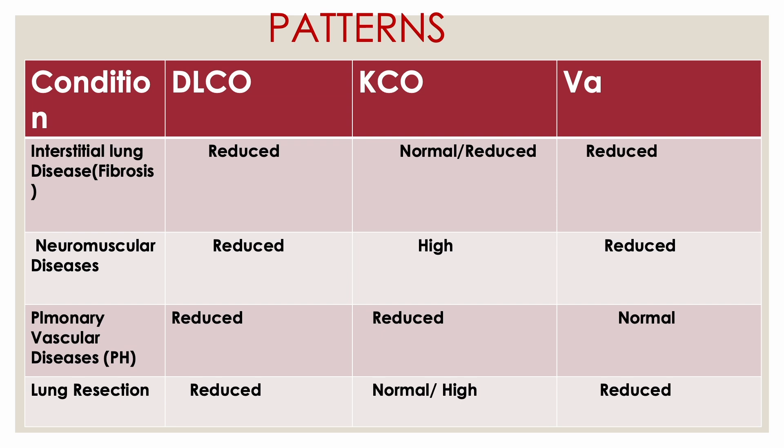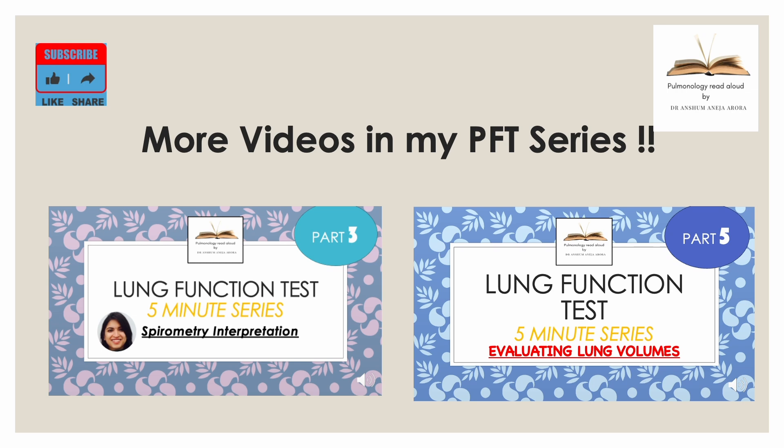In neuromuscular disease, the transfer coefficient KCO may stay high. In pulmonary vascular disease, DLCO is reduced because KCO goes low, but alveolar volume remains normal. In lung resection, DLCO is reduced due to loss of alveolar units — the alveolar volume decreases — and the transfer coefficient may be normal or sometimes high because all blood is recruited to the remaining alveoli. The DLNO/DLCO ratio is a new index using nitric oxide that can distinguish whether reduction is due to restriction or vascular abnormality.